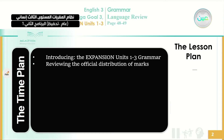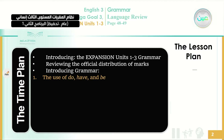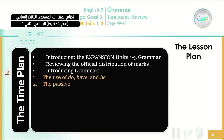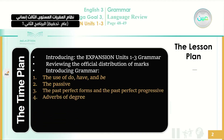Next, we're going to review the official distribution of marks, just to remind you about the distribution of marks. Next, we are going to introduce grammar. In this grammar, we are going to study some parts: first, how to use do, have, and be — these auxiliary verbs. Also, we're going to teach you how to use the passive forms. Number three, how to use the past perfect forms and the past perfect progressive. Number four, adverbs of degree. And number five, sentence adverbs.